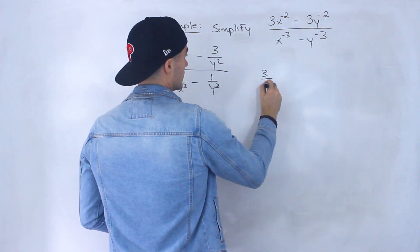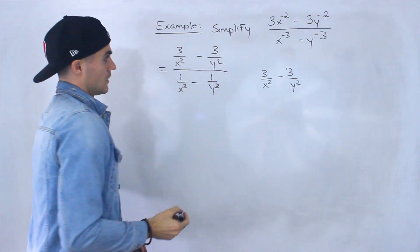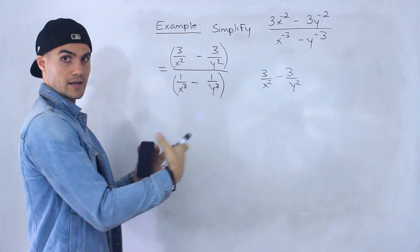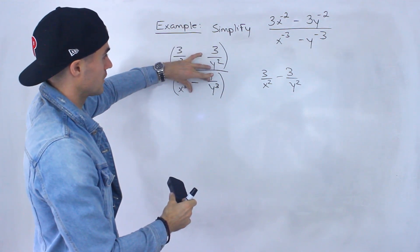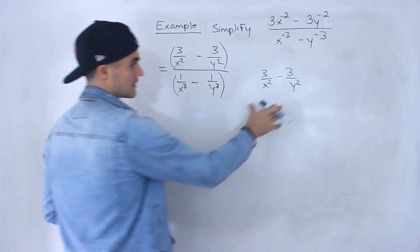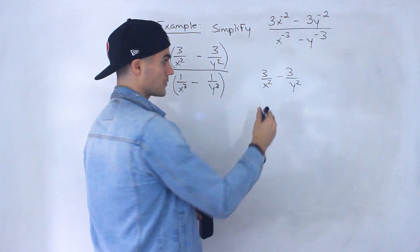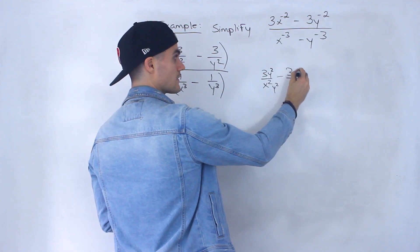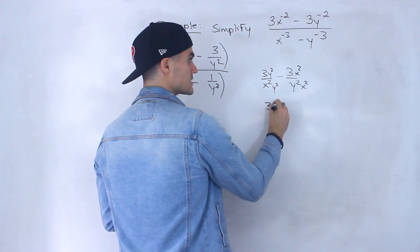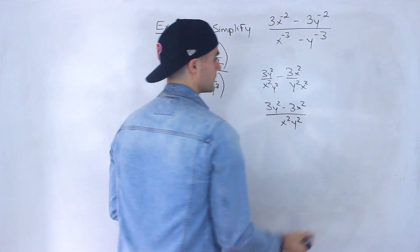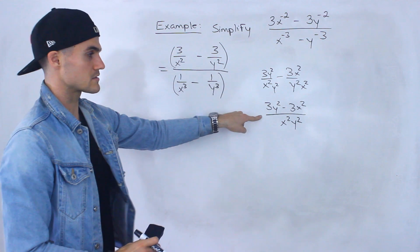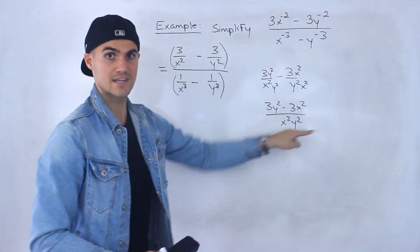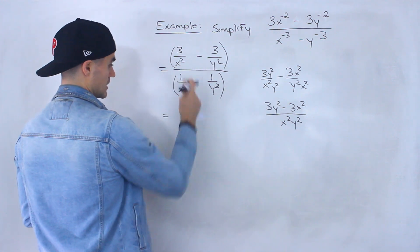From here, what I'm going to do is combine the numerator into one fraction and the denominator into one fraction. Once we have a single fraction on top and a single fraction on the bottom, we can divide them more smoothly. To combine the top fractions, notice they are subtracting, so we need a common denominator. I'll multiply the first by y squared and the second by x squared, giving us 3y squared minus 3x squared, all over x squared y squared.